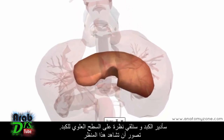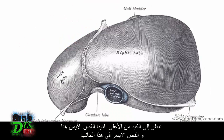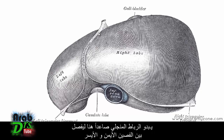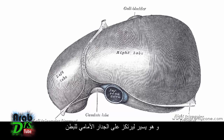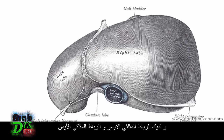Looking at this view — the same view I just showed in the 3D model — we're looking superiorly at the liver. We've got the right lobe here, left lobe on this side, and the inferior vena cava posteriorly. You can see the falciform ligament coming up here separating the right and left lobes, going off to attach to the anterior abdominal wall. Then you've got the coronary ligaments coming down from the diaphragm, and the left and right triangular ligaments.